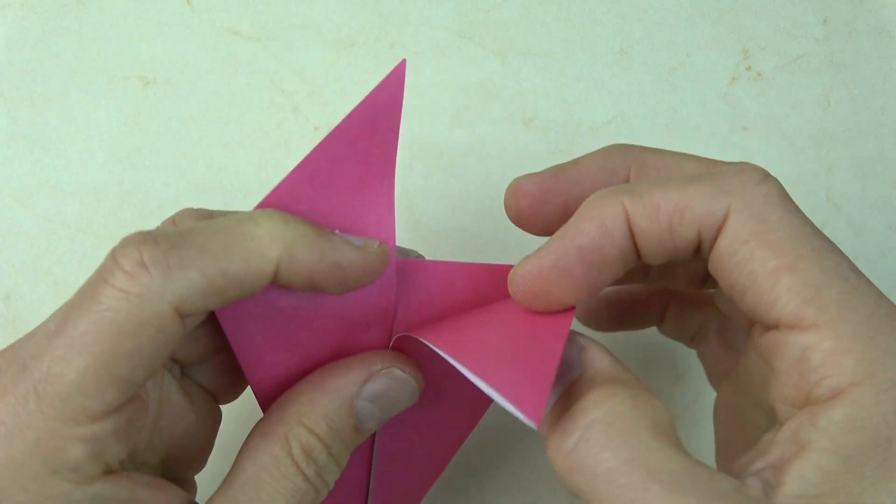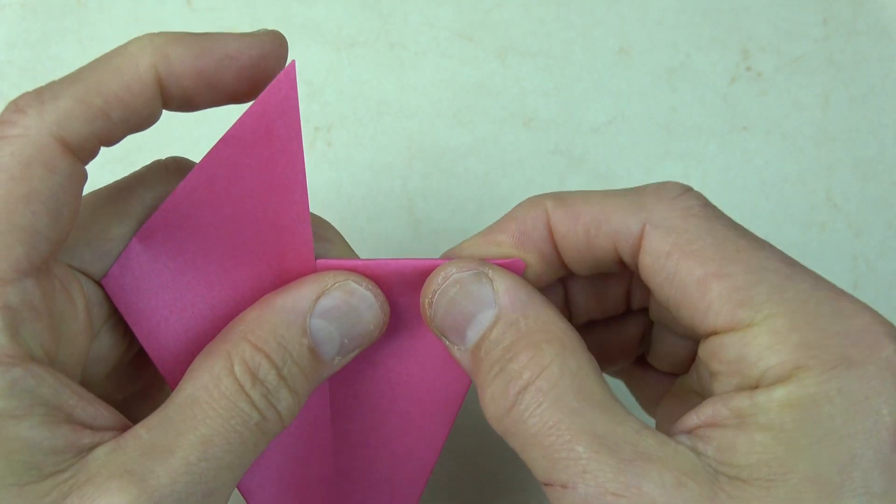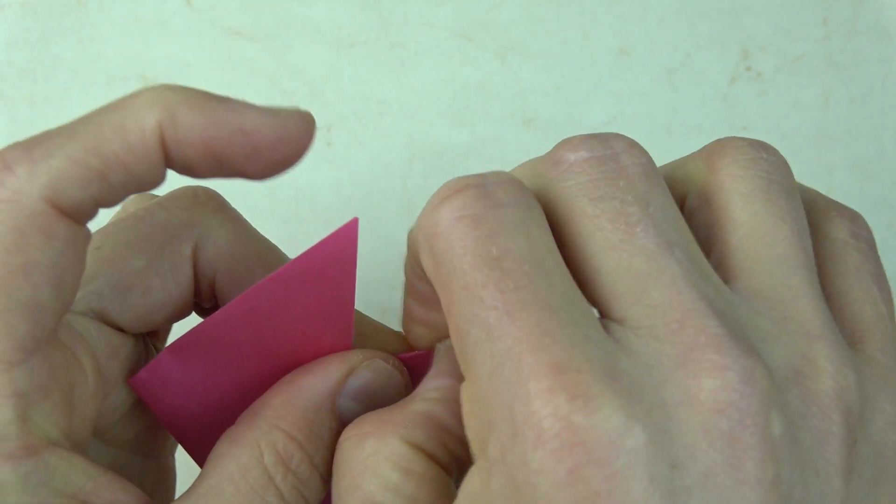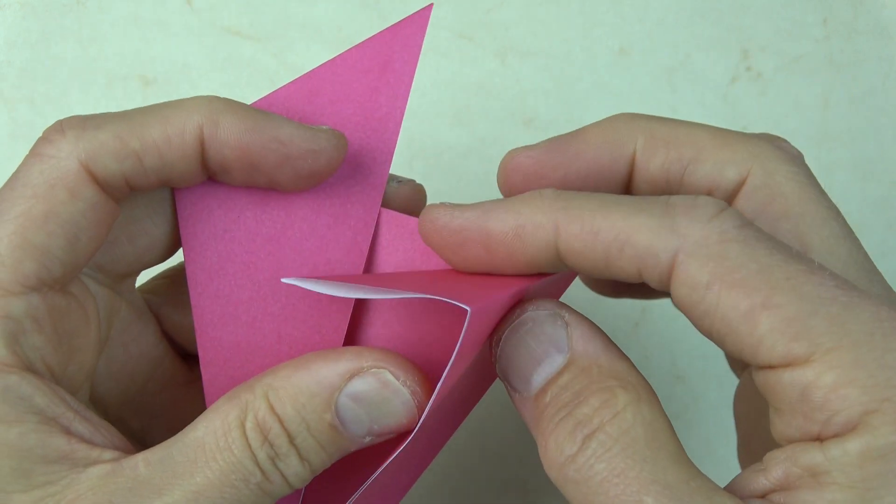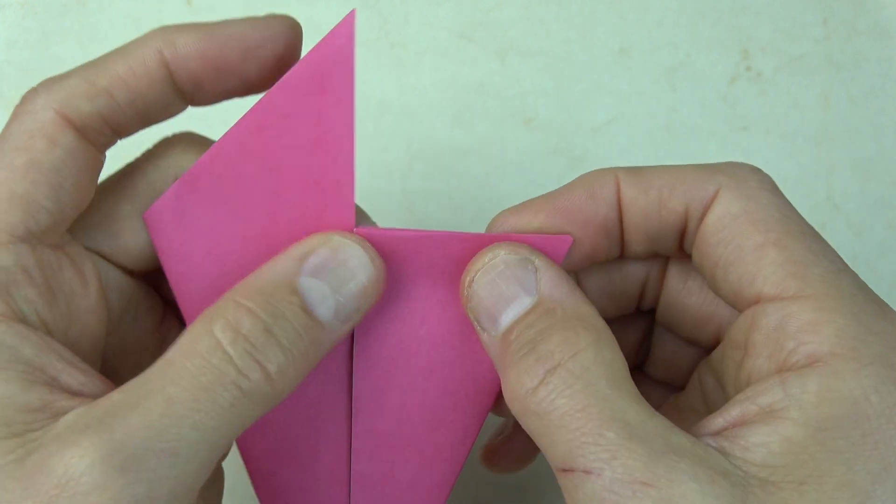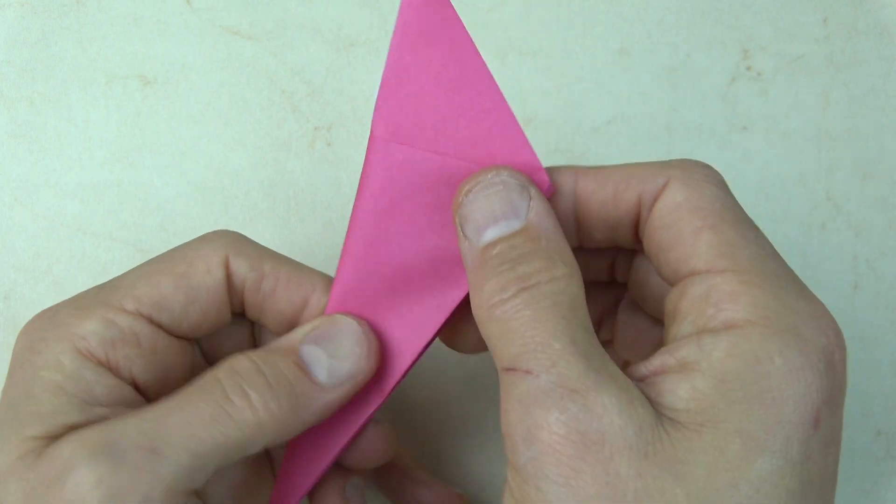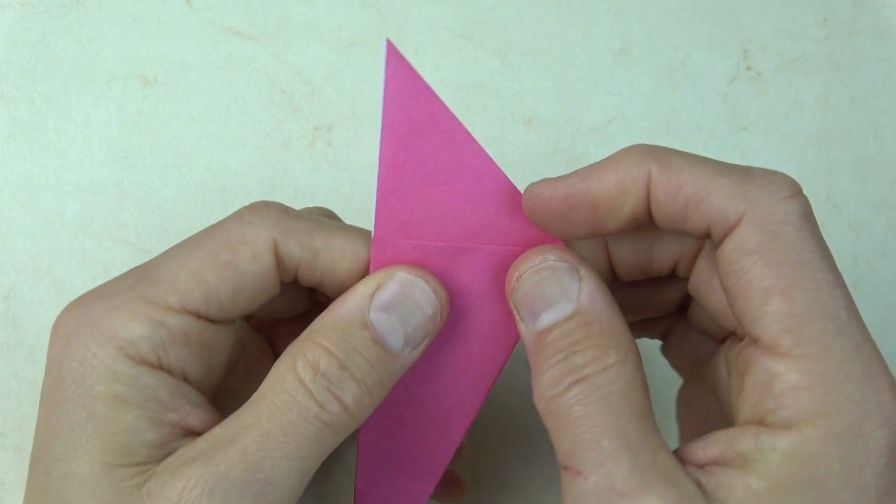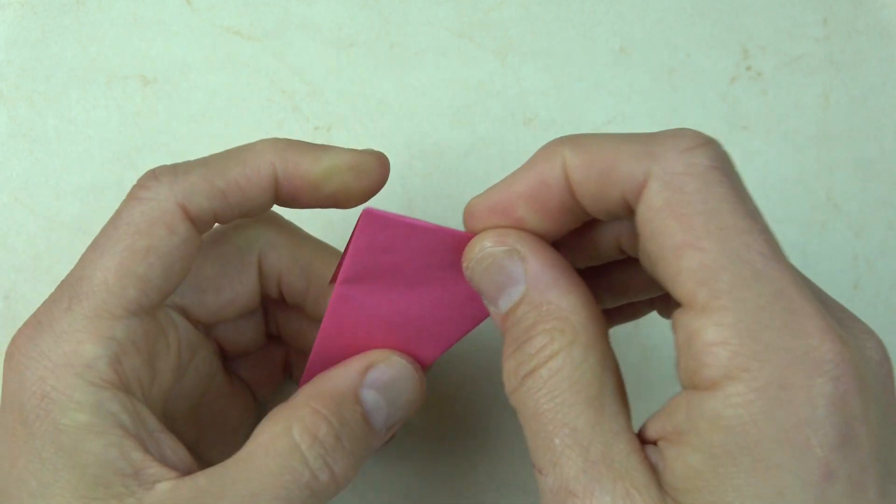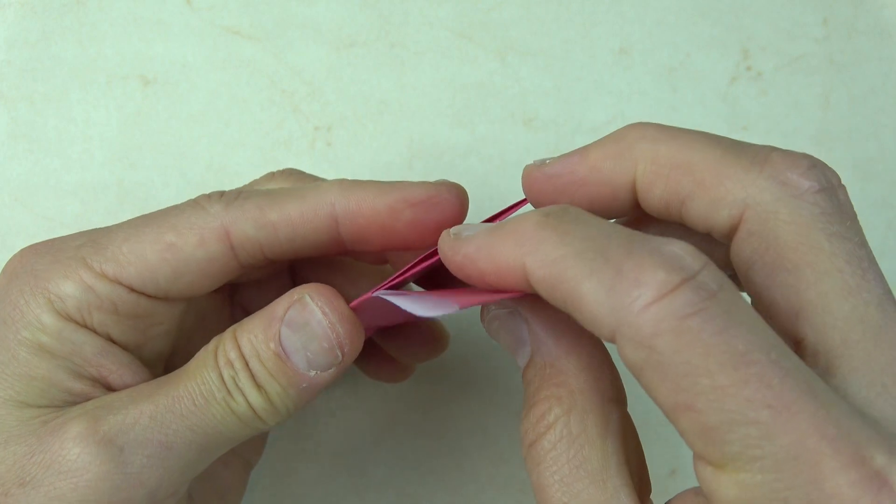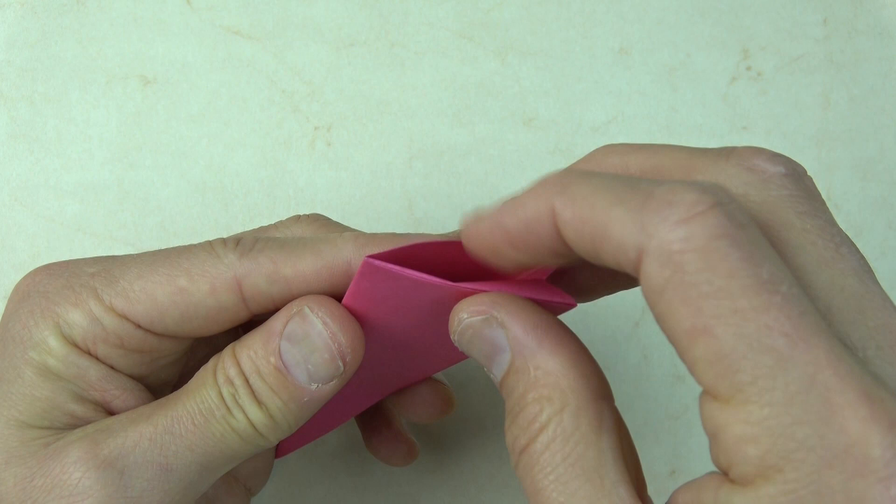Okay now wrap this flap over this edge. And unfold it. And now fold it. And fold in half. And wrap this flap over the edge. And unfold it. And now tuck it into this pocket. Like that.